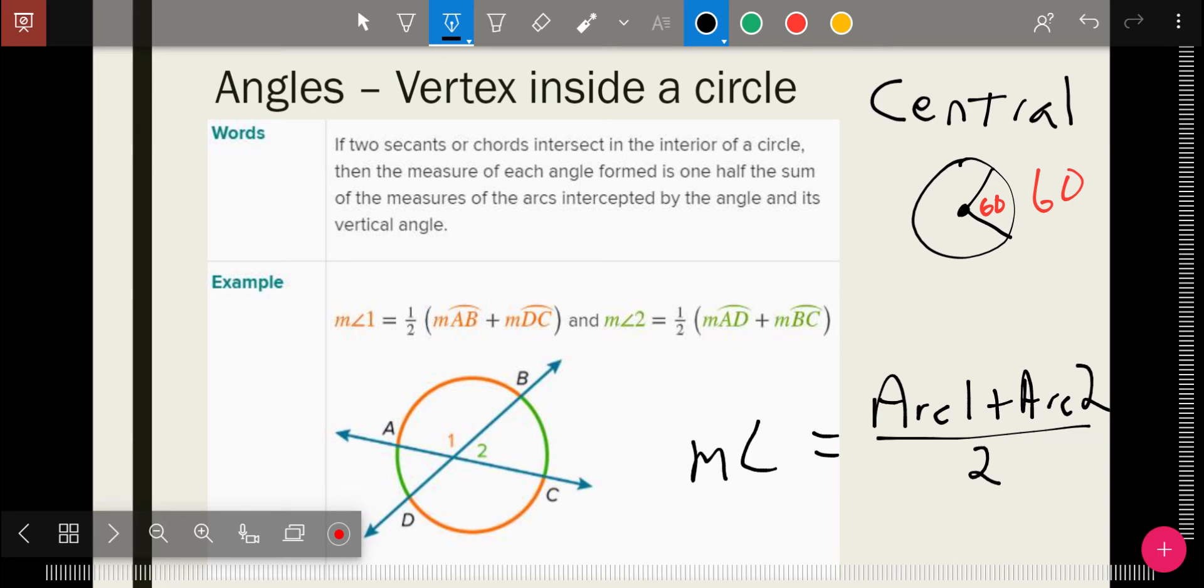So again, where is the vertex? That's the question you've got to ask yourself. Where is the vertex? Inside, not at the center, means that I add the arcs and divide by two. Add the arcs and divide by two. One of three important rules we're going to go over today. So this is when that vertex is inside the circle.